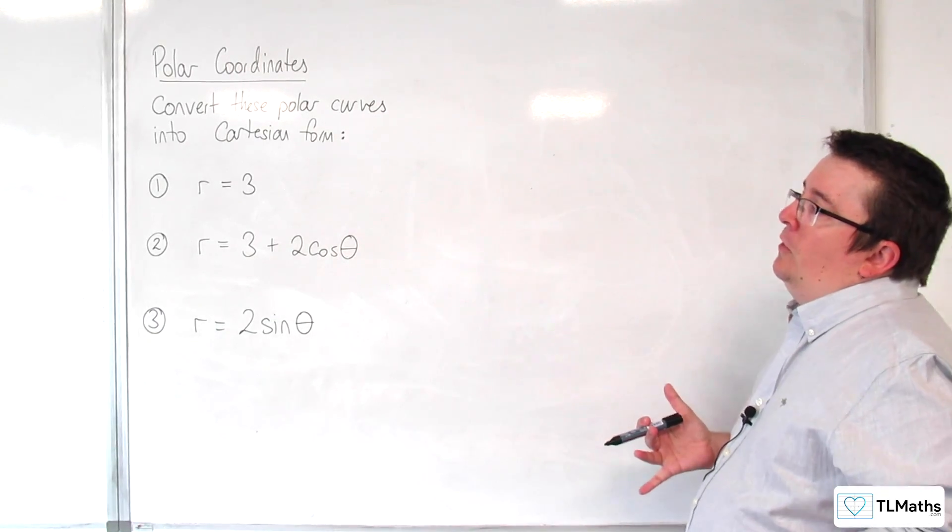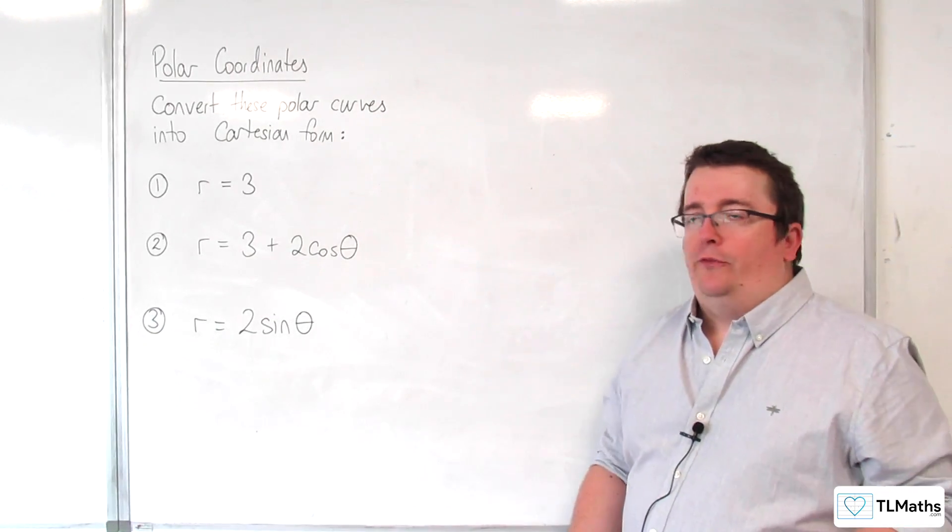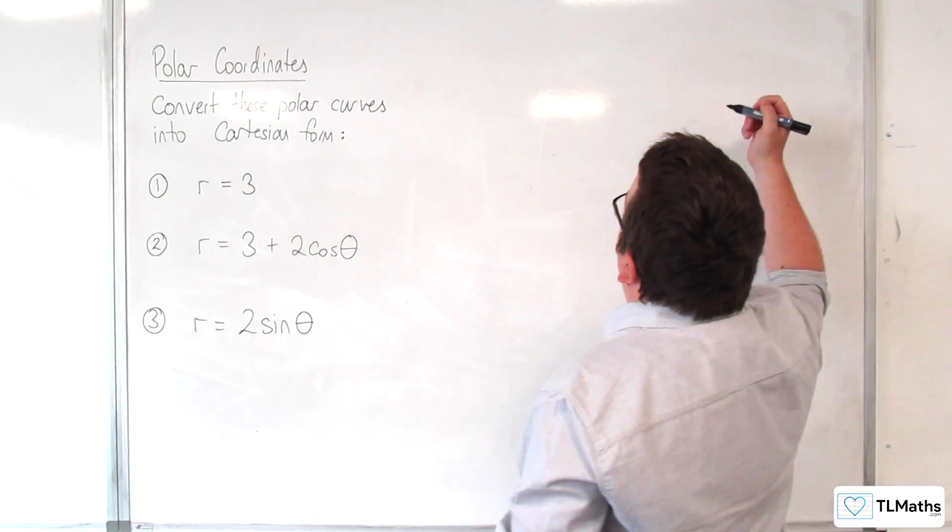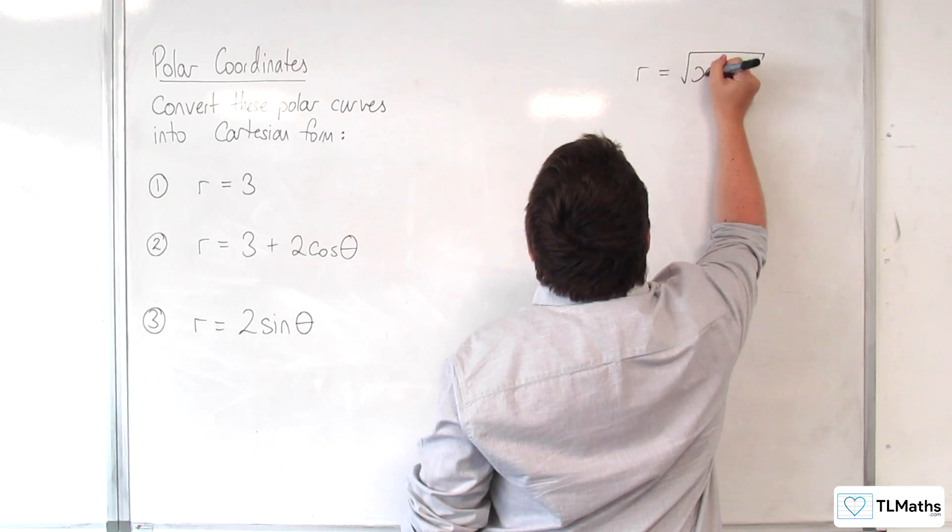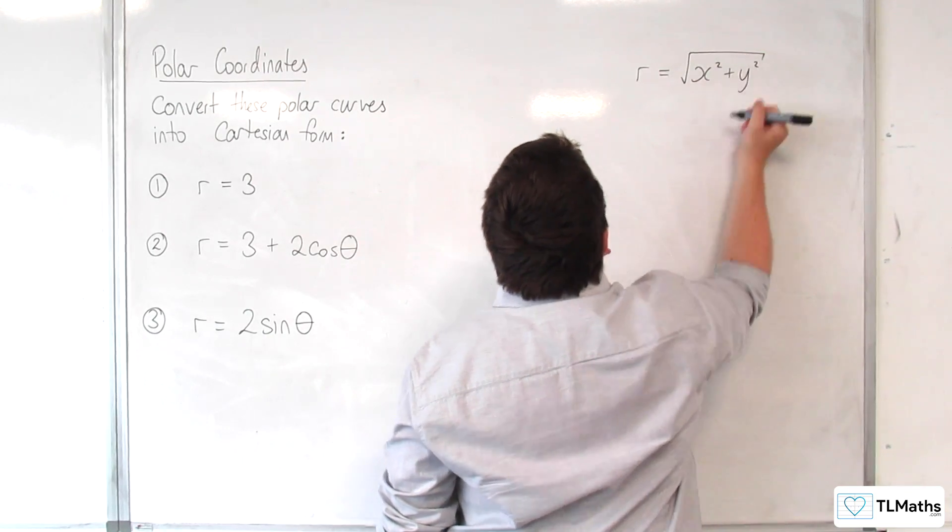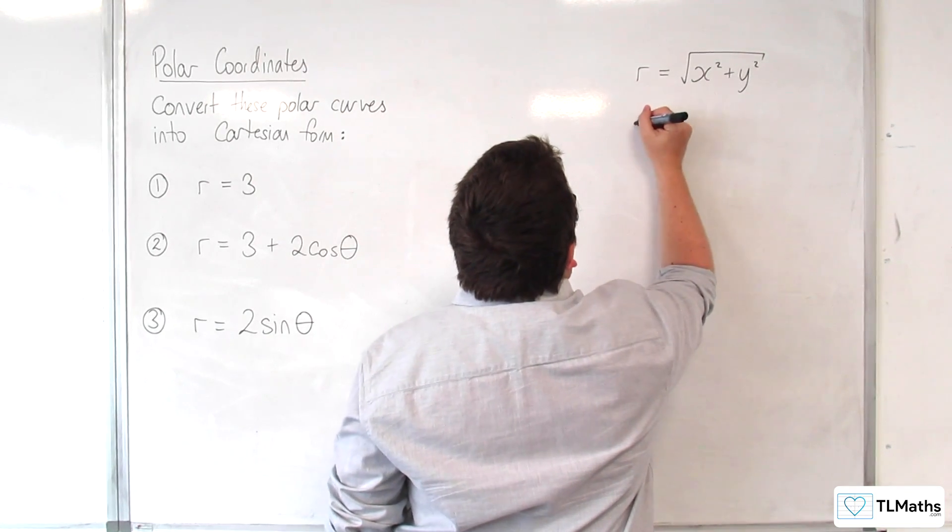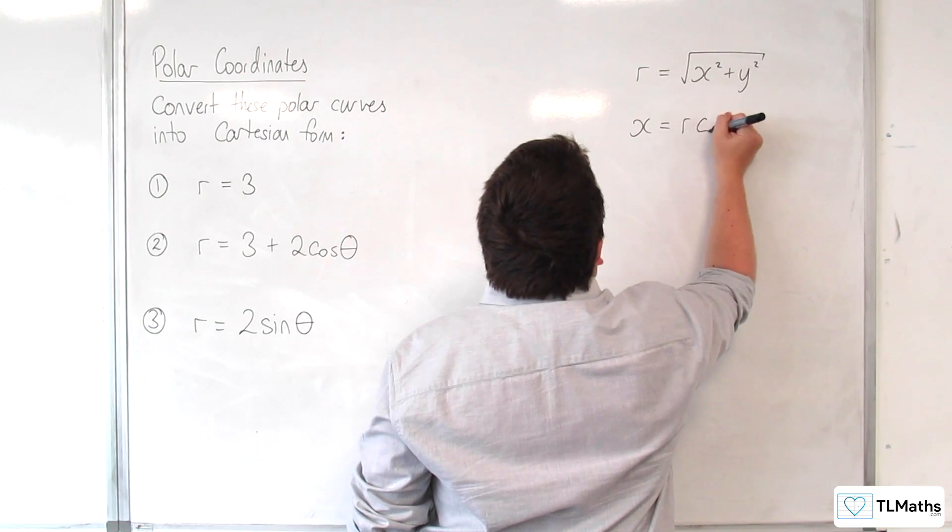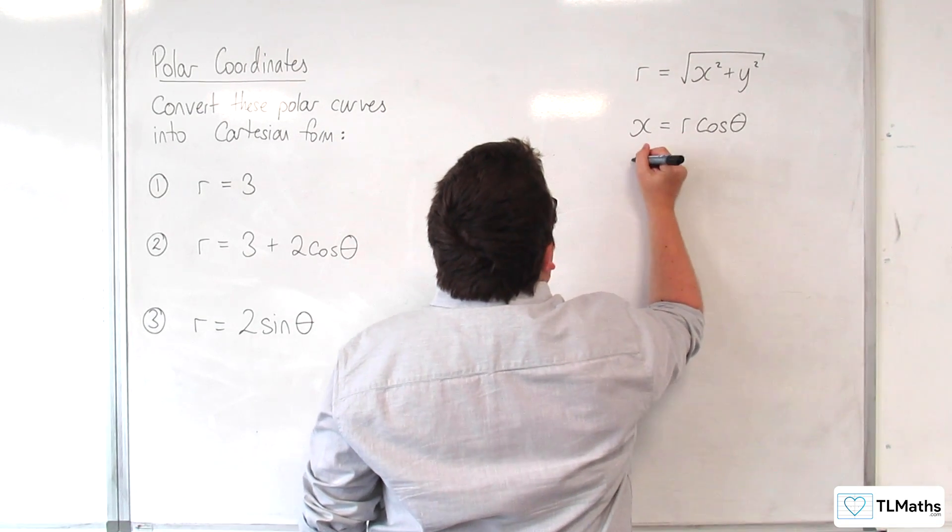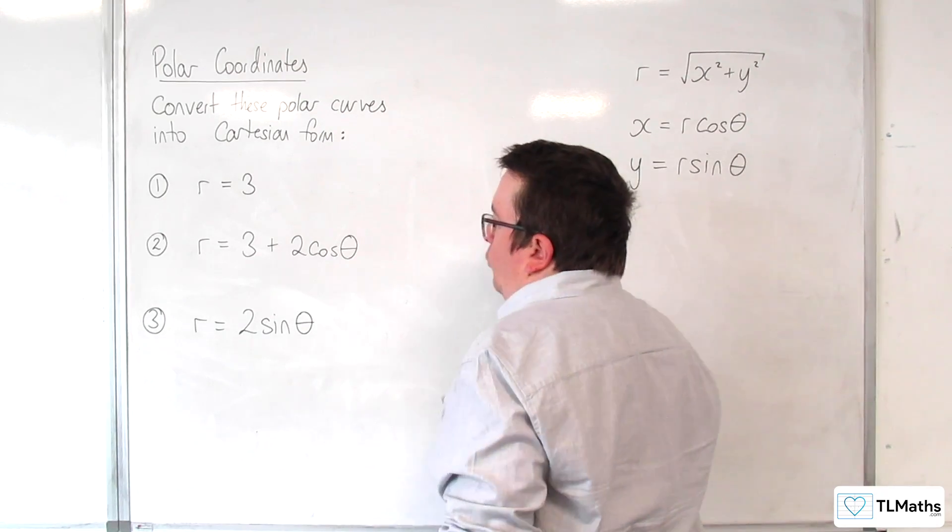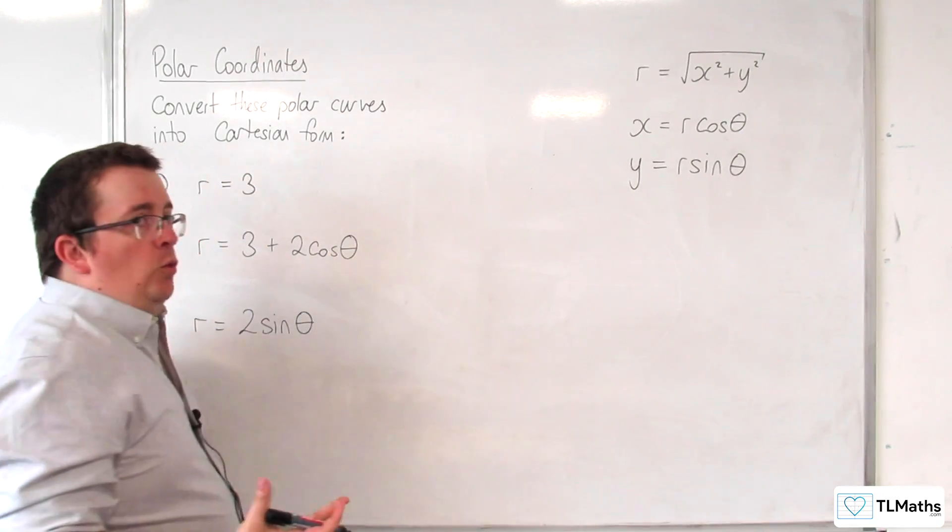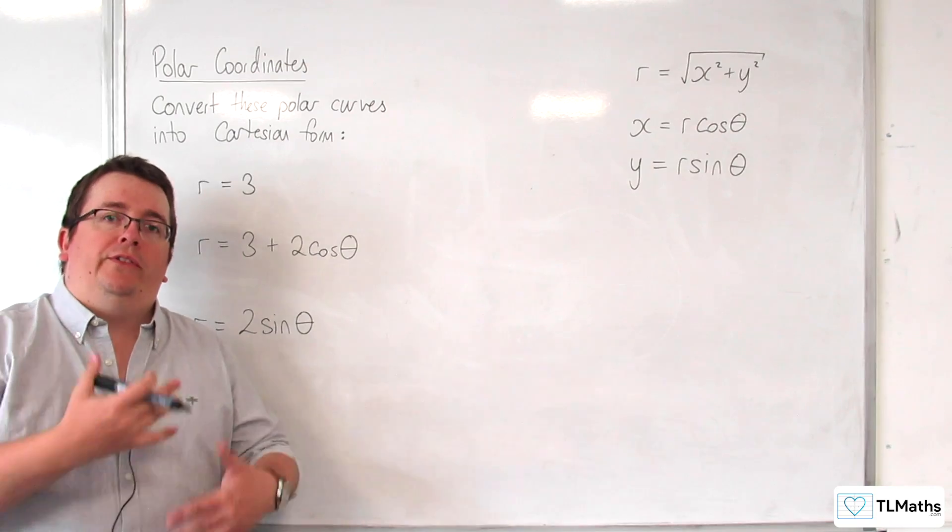So how do we do it? Well, it's all going to come down to the fact that we should recognize that R is equal to the square root of x squared plus y squared, and we can say that x is equal to R cosine theta, and y is equal to R sine theta. And we were seeing this when we were converting polar coordinates into Cartesian coordinates and vice versa.